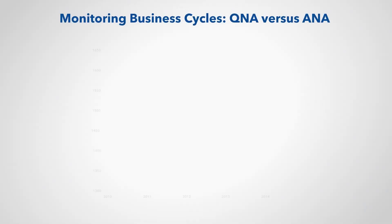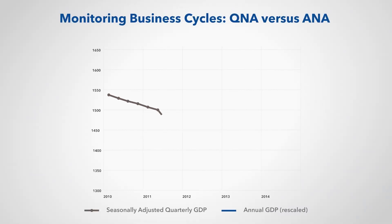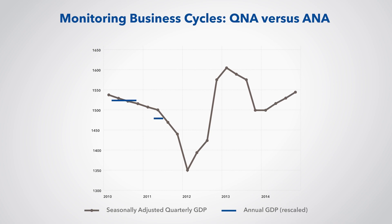This example shows quarterly and annual GDP data from 2010 to 2014. Note that for this example, we have rescaled the annual GDP, shown with a single blue line for each year, to equal the average of the quarterly GDP for each year. In fact, the annual GDP is equal to the sum of the quarterly GDP, except for those countries that rescale their quarterly GDP to show the annual rate.